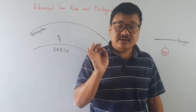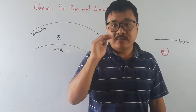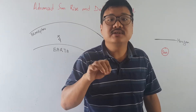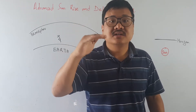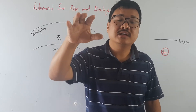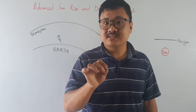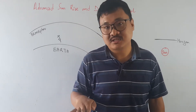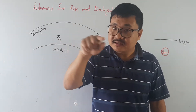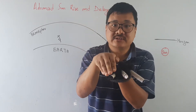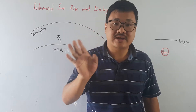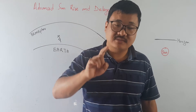First we have to understand where the sun rises and where it sets — that place is called the horizon. The horizon is that place at which the sky and the earth seem to meet each other. The best example is if you go to the beach and look at the ocean — at a very far distance, the sky and the water surface seem to meet, and that is called the horizon. From there, the sun rises up and sets down.